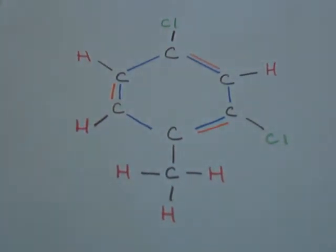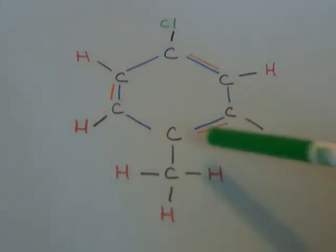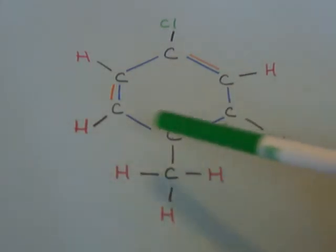So here we want to name this compound, and it's organic chemistry, so there's a few rules that we need to go by. First off, we can see that we have halogens - we have Cl right here and here. And then we also have a methyl group right here. So we need to take notice of that.